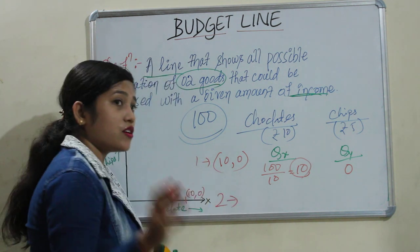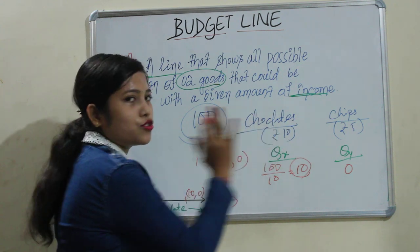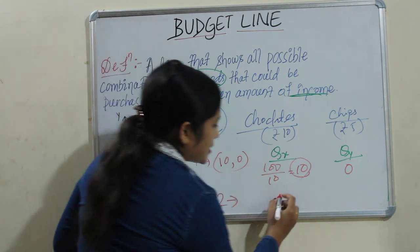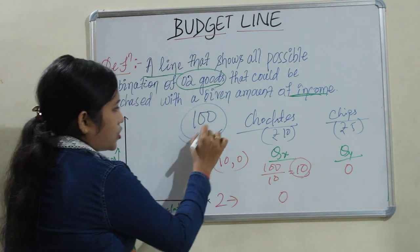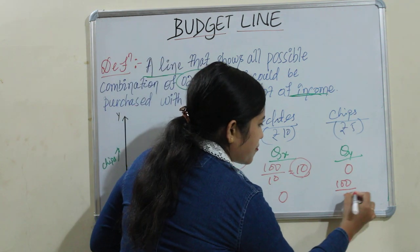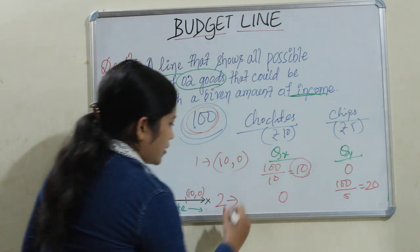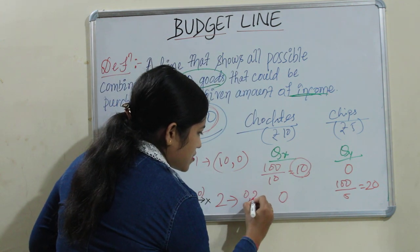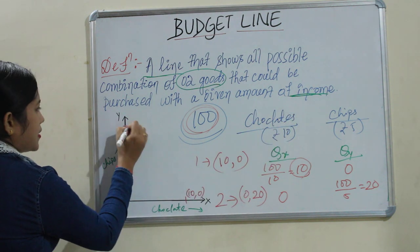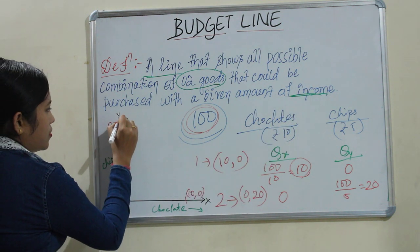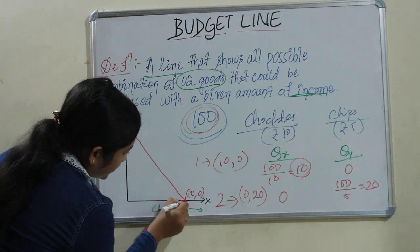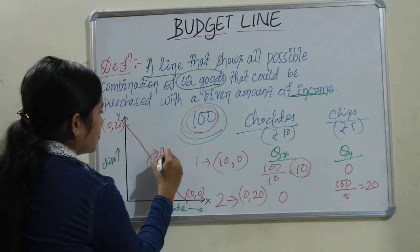Next case: suppose you are not purchasing any chocolate and want only chips. So chocolate quantity is 0, and your total 100 rupees can be diverted to chips. That means 100 divided by 5 equals 20 chips. So the second combination is 0 chocolates and 20 chips. If you join these two points — (10, 0) and (0, 20) — this is called your budget line.